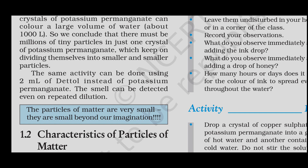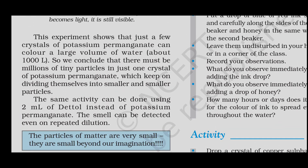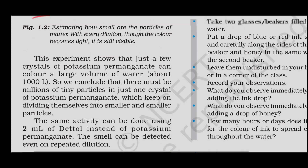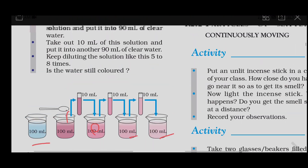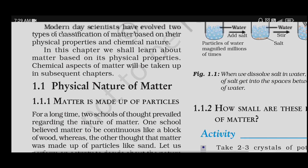The same activity can be done using 2 ml of Dettol instead of potassium permanganate. Potassium permanganate can be detected even on repeated dilution.